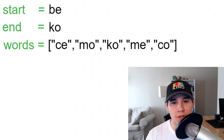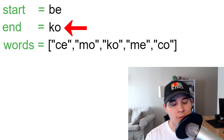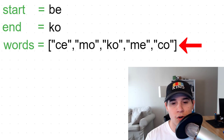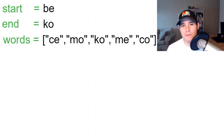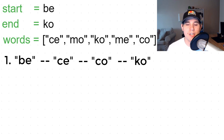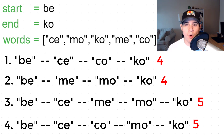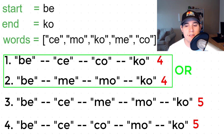Anytime you think 'find the shortest sequence,' you should immediately think you need to use a shortest path algorithm like breadth-first search. Let's say we have a start word 'be', end word 'ko', and the following words in our list: ce, mo, ko, me, and co. Using this word list we have four different paths we could take. We could go from 'be' to 'ce' by changing b to c, then 'ce' to 'co' by changing e to o, then 'co' to 'ko' by changing c to k. We only care about the shortest path — 'be' to 'ce' to 'co' to 'ko'.